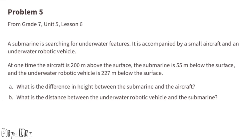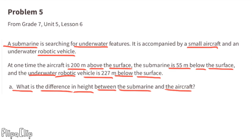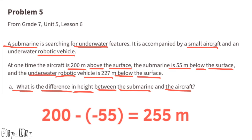Problem number 5 from 7th grade Unit 5 Lesson 6. A submarine is searching for underwater features, accompanied by a small aircraft and an underwater robotic vehicle. The aircraft is 200 meters above the surface, the submarine is 55 meters below, and the robotic vehicle is 227 meters below. Part A: the difference in height between the submarine and the aircraft is 200 minus negative 55, which equals 255 meters.